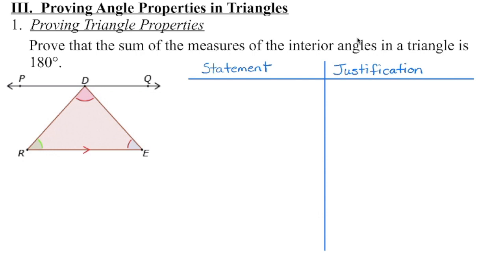Let's draw a line passing through vertex D at the top that is going to be parallel to the line on the base of the triangle. You always want to have an idea as to where we're going with this — we ultimately need to show that the three interior angles added together equal 180 degrees. We can also see that we have three other angles here forming a straight angle, which will also be 180 degrees.